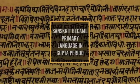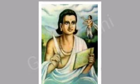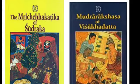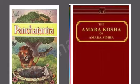Sanskrit literature grew well during the Gupta period. Kalidasa was a major poet and one of the Navaratnas in the court of Chandragupta II. He wrote four epic poems and three dramas. Shudraka wrote Mrichakatika, Vishakadatta wrote Mudrarakshasa, and the Panchatantra of Vishnu Sharma also belongs to this period. The dictionary by Amarasimha, called Amarakosha, is an excellent work.